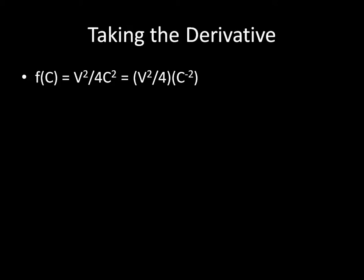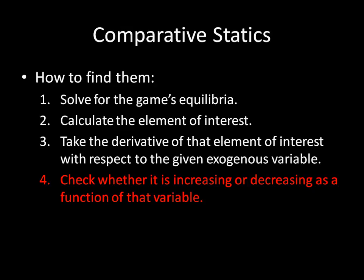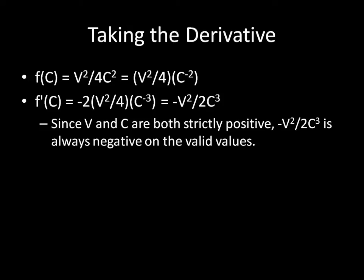We need to take the derivative with respect to C. F prime of C equals negative two times V squared over 4 times C to the negative third, which simplifies to negative V squared over 2C cubed. Since V and C are both strictly positive — we established that the value of the object and the cost of war are both strictly positive numbers — dividing a positive by a positive gives a positive, and multiplying by negative one gives a negative. So this derivative is negative for all valid values of V and C.